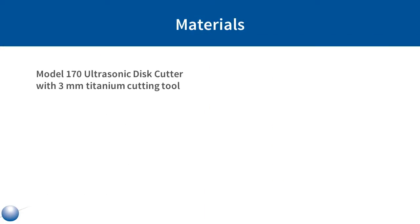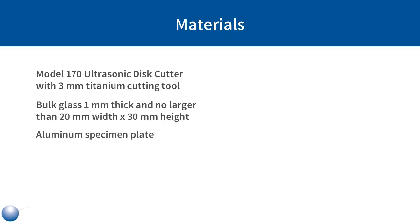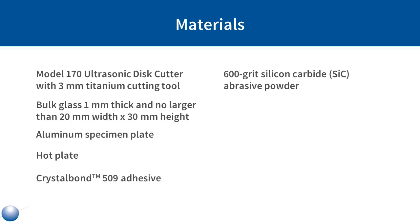You will need the Model 170 Ultrasonic Disk Cutter, 1 millimeter thick bulk glass, an aluminum specimen plate, a hot plate, crystal bond 509 adhesive, 600 grit silicon carbide abrasive powder, water, tweezers, a wooden stick, and cotton swabs.